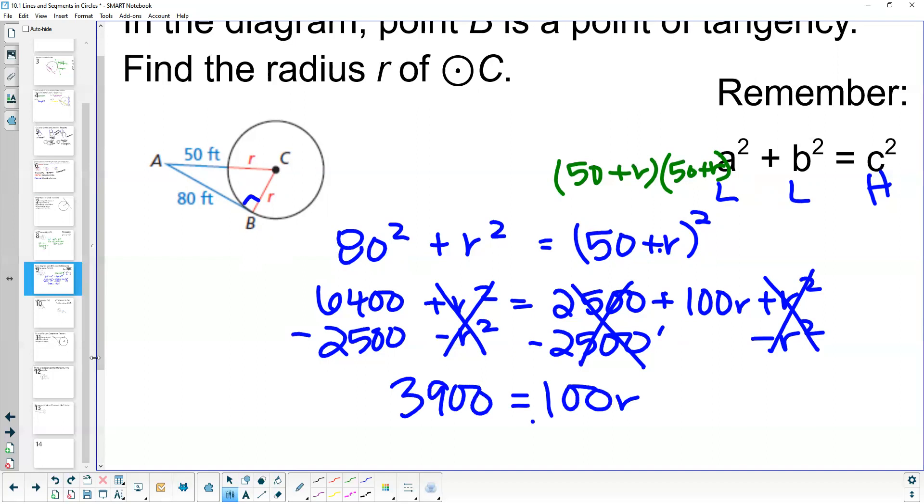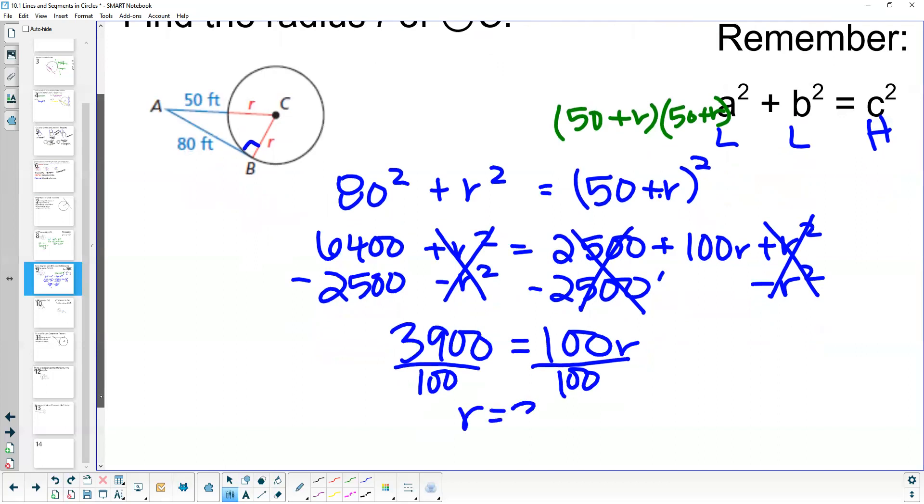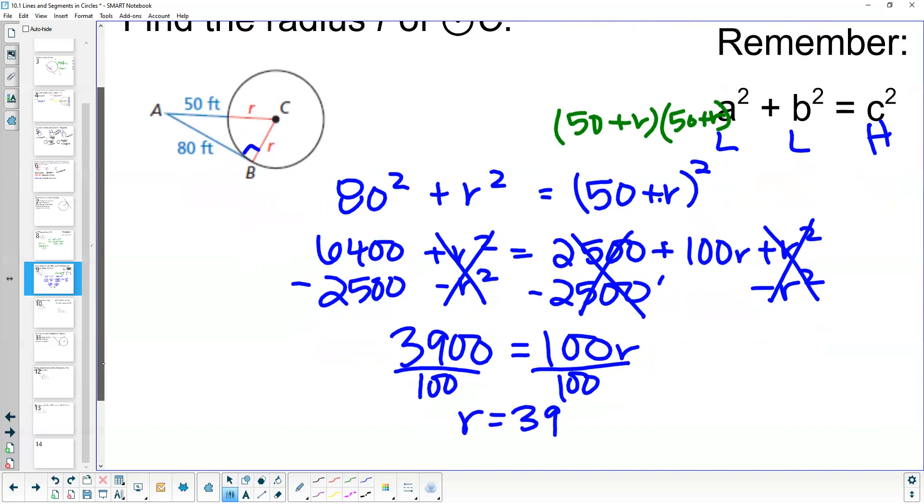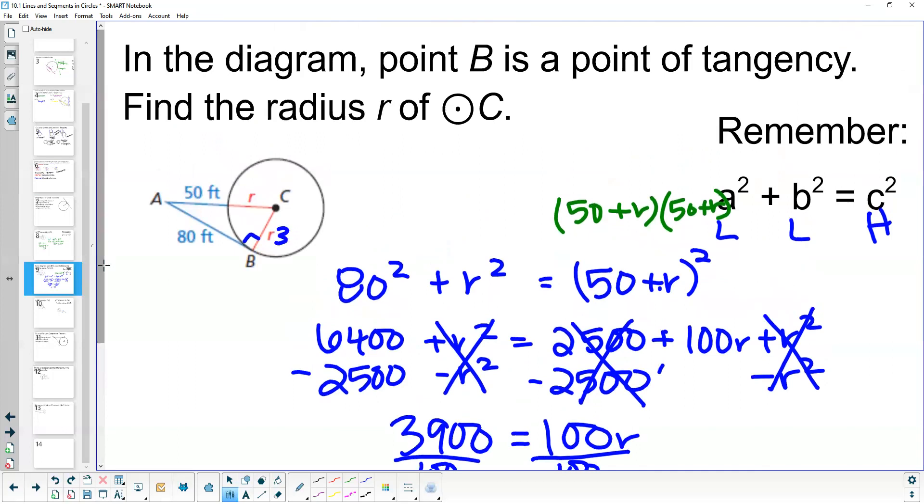Dividing by 100 on both sides, we get r equals 39. The radius of our circle is 39, making this whole distance 89.